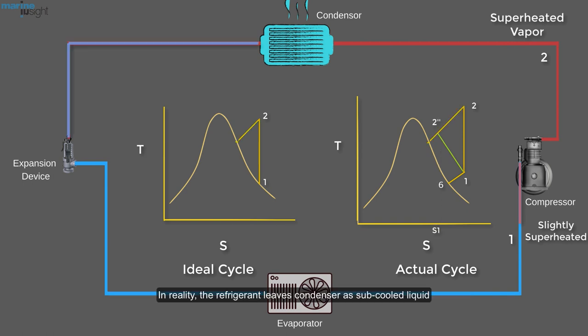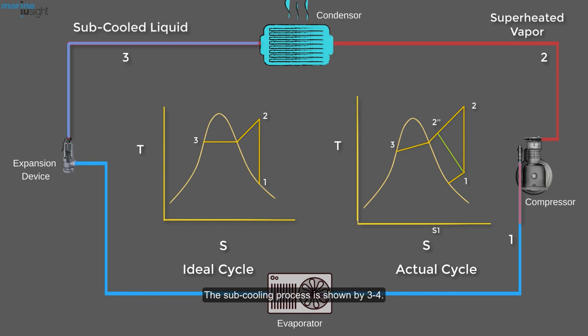In reality, the refrigerant leaves condenser as sub-cooled liquid. The sub-cooling process is shown by 3-4. Sub-cooling increases the cooling capacity and will prevent entering any vapor bubbles to the expansion valve.